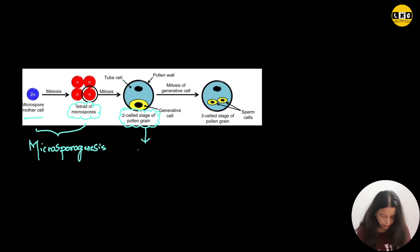60% of the angiosperms are dehisced or released in this two-celled stage. Whereas, 40% of the angiosperms are dehisced in three-celled stage where the generative cell will form two male gametes.